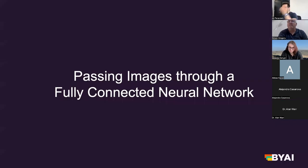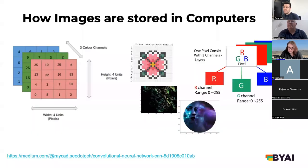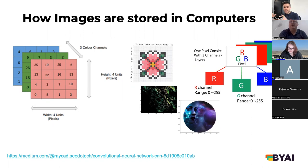To understand how SemSec models work, we need to understand how images work. As we covered in previous workshops, images are stored in computers using arrays — think of an image as a stacked array of numbers. In our convolutional neural network workshop, we covered how different channels in an image represent different colors. Each cell in the grid represents a pixel, and the numbers represent the pixel intensity of that specific color channel, combining together to create an image.